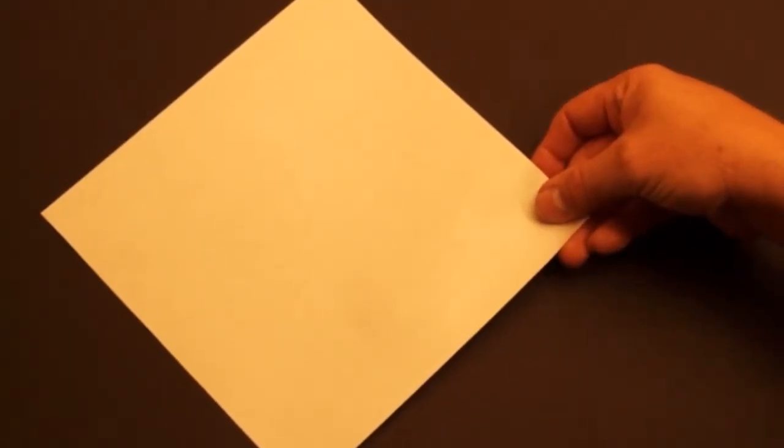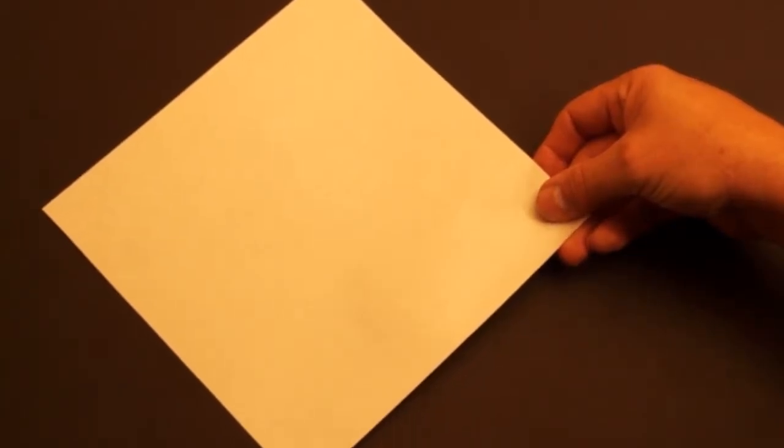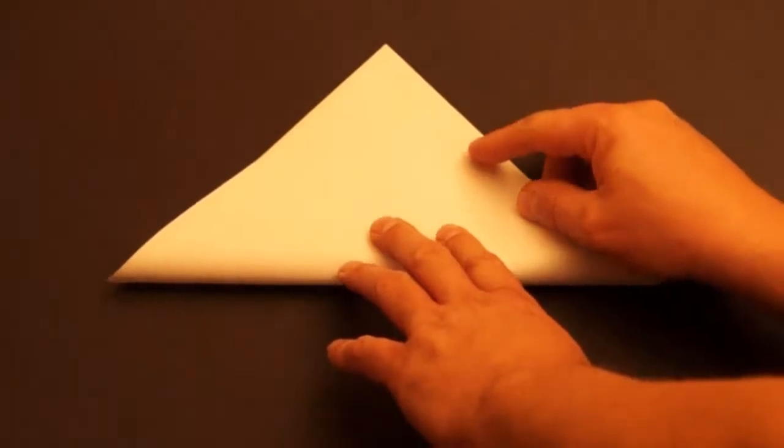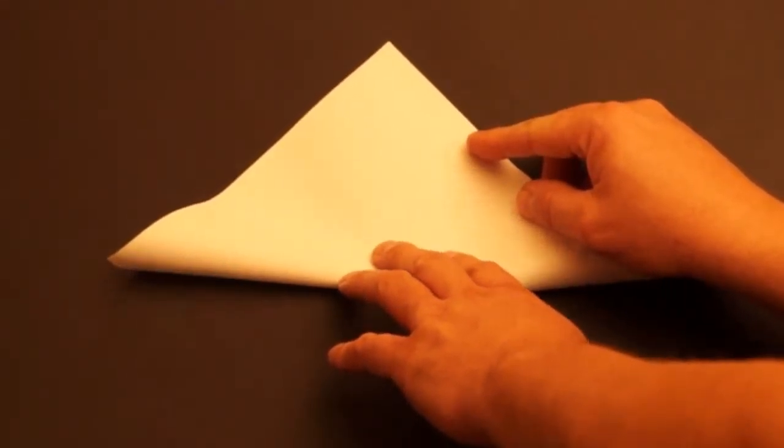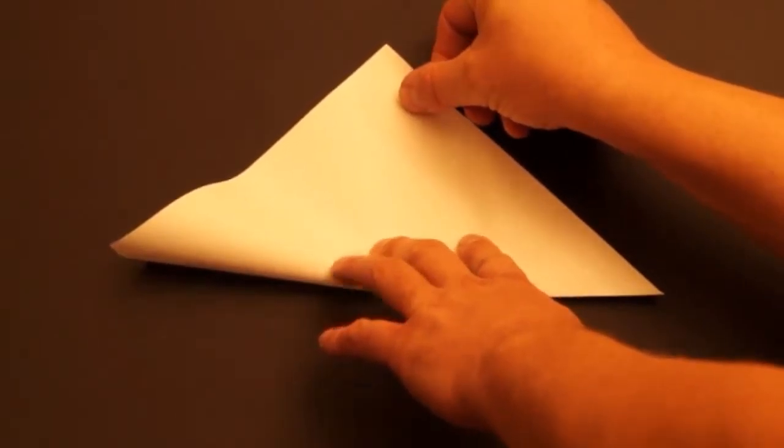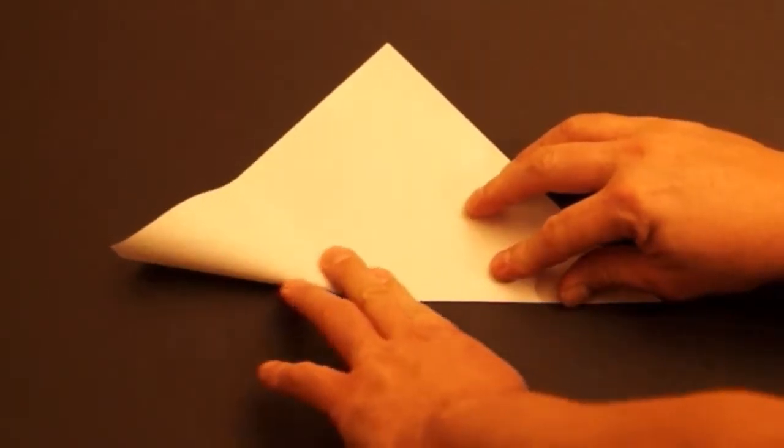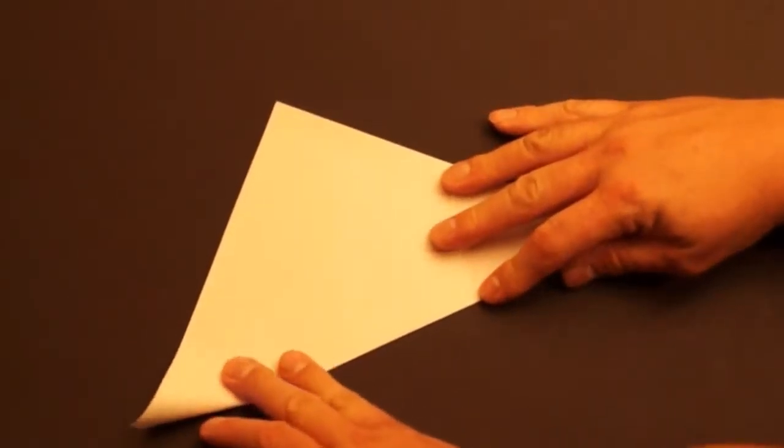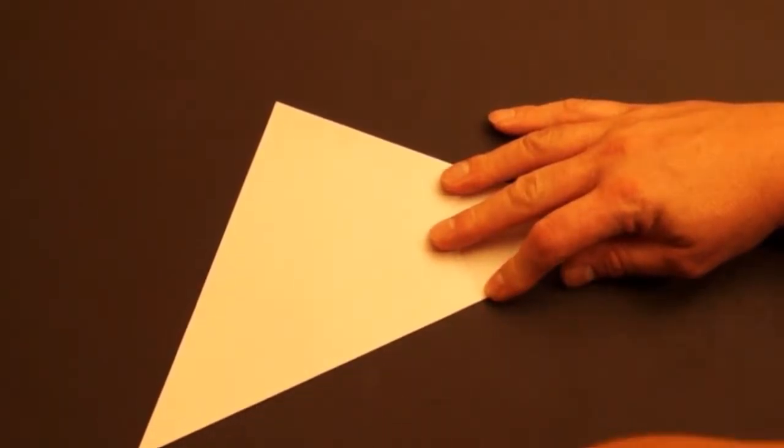First, we start with a square, turn it like a diamond, fold the bottom to the top. Try to line it up the best you can. Press good on the fold.